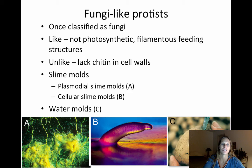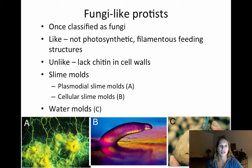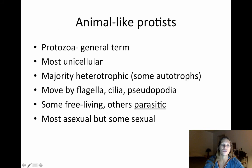Then we've got our fungi-like protists. They are not true fungi — they're not photosynthetic. They have what we call filamentous feeding structures. Unlike true fungi, they don't have the stuff called chitin in the cell walls, which I'll talk about when I talk about fungi later. Examples of fungi-like protists are things called slime molds. These things are crazy. Here's a picture of a plasmodial slime mold, a cellular slime mold, and a water mold — this is what water mold looks like on a potato.